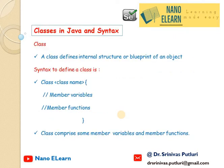Let us see how classes are defined in Java along with its syntax. A class defines the internal structure or blueprint of an object. The syntax looks like: class ClassName, and it has member variables and member functions in it. That is, a class comprises some member variables and member functions.